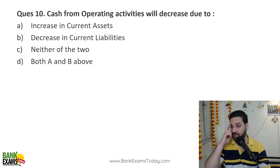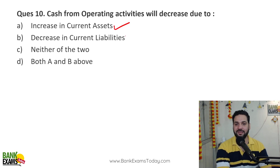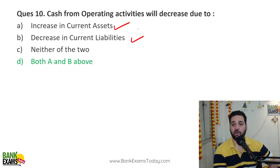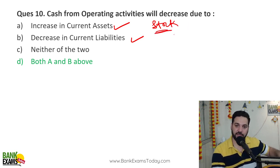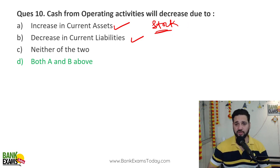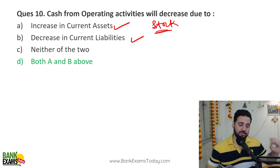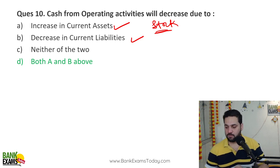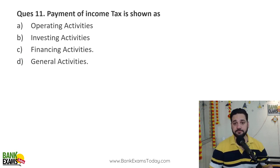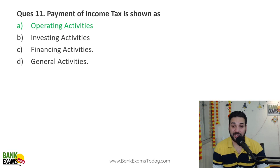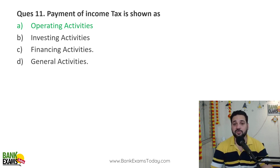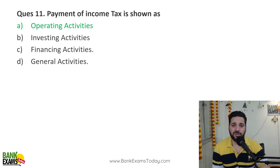Cash from operational activities will decrease due to an increase in current assets or a decrease in current liabilities — in both cases. If current assets increase, for example you buy more stock, you have to put in more cash into the business. Similarly, if creditors or any current liability decreases, you need to put more cash in. Payment of income tax is shown as an operating activity, as income tax is related to day-to-day business activity.